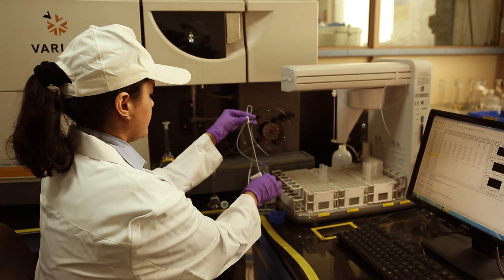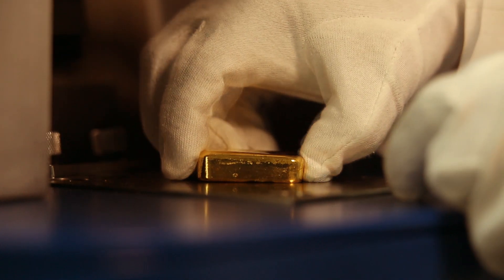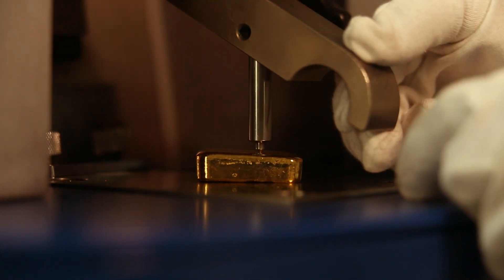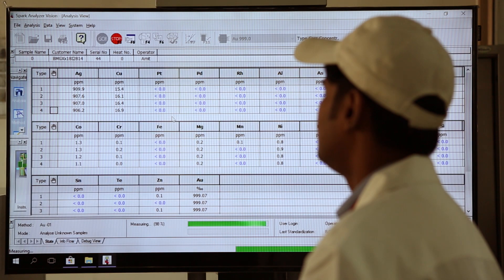Gold purity can also be determined by spark spectrometry and ICP spectrometry. Spark spectrometry involves igniting a high energy spark generated by highly charged ionized argon gas. The light emitted provides simultaneous quantitative analysis of gold.